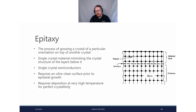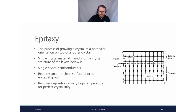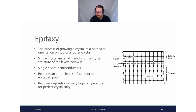Epitaxial growth is possible with CVD. You can grow a crystal with a particular orientation on top of another crystal — single crystal materials that mimic the crystal structure of layers below. This is great for the electronics industry and single crystal semiconductors. However, it is quite complex — it requires a very clean surface, clean room conditions, and very high temperatures to get perfect crystallinity in the required orientation.